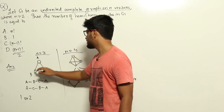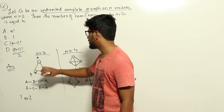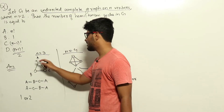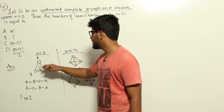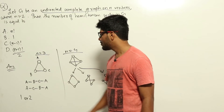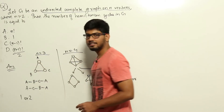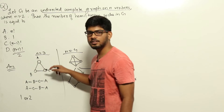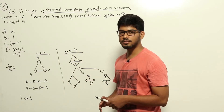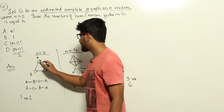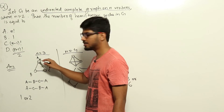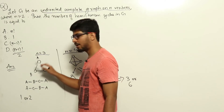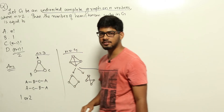For n equal to 3, the undirected complete graph has only one cycle: a-b-c and back to a. If nodes are labeled, then a-b-c-a and a-c-b-a are two different cycles (one being the reverse). Since the question doesn't specify whether nodes are labeled, we consider either one or two cycles for n=3.